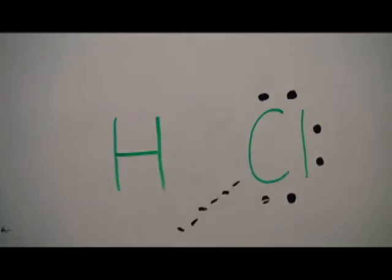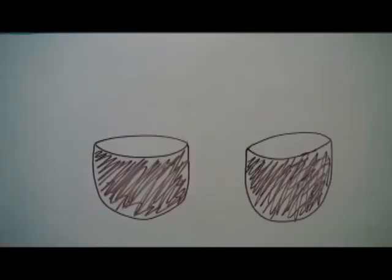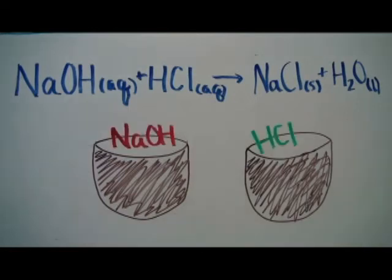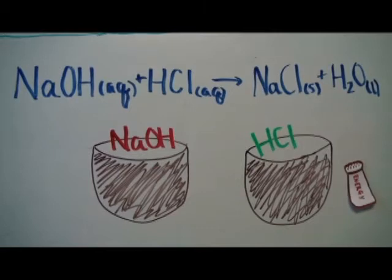Basically, BDE is the energy required to break a chemical bond. To use this method to find enthalpy, we have a cooking analogy, a BDE recipe. In order to find the change in enthalpy for the reaction HCl plus NaOH yields NaCl plus H2O, we need to think of the reactions separately.